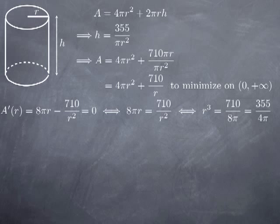Since the cubic root is a one-to-one function, this is equivalent to r = ∛(355/(4π)). Plugging that into a calculator gives approximately 3.04 centimeters — essentially 3 centimeters.